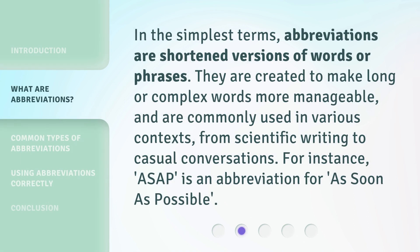In the simplest terms, abbreviations are shortened versions of words or phrases. They are created to make long or complex words more manageable, and are commonly used in various contexts, from scientific writing to casual conversations. For instance, ASAP is an abbreviation for "as soon as possible."